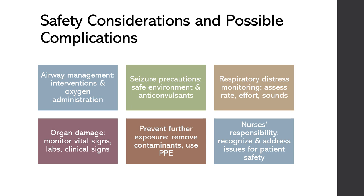Monitoring for respiratory distress is vital — regularly assess the patient's respiratory rate, effort, and breath sounds, and be prepared to provide respiratory support such as oxygen therapy. Organ damage is another possible complication: depending on the toxin, the liver, kidneys, heart, or other organs may be affected. Monitor vital signs, laboratory results, and clinical manifestations for early signs of organ dysfunction and notify the healthcare provider promptly. It's also essential to prevent further exposure to the toxic agent by removing contaminated clothing, washing affected skin with soap and water, or administering antidotes if available. Follow appropriate safety precautions such as wearing PPE when handling contaminated materials.